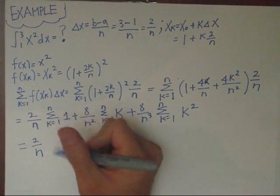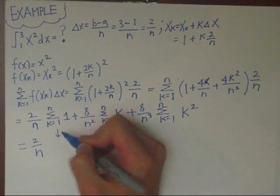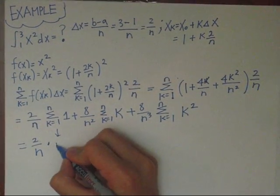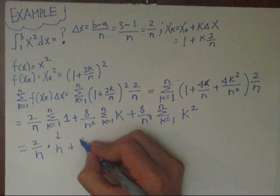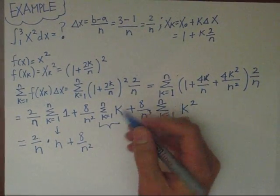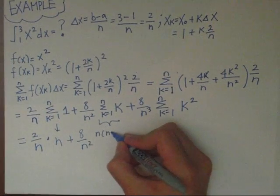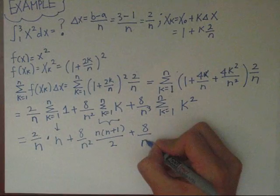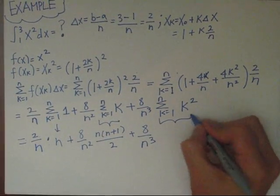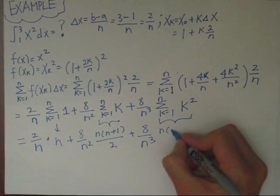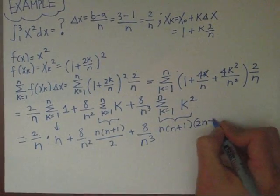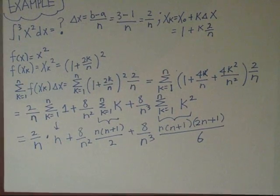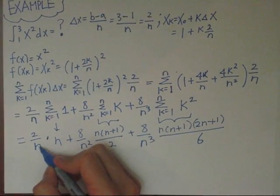This equals 2 over n times the sum. The sum of 1 when k equals 1 to n is just n, plus 8 over n squared times the sum, which equals n times n plus 1 over 2, plus the sum of k squared where k is 1 to n. You can derive this sum formula using other methods.